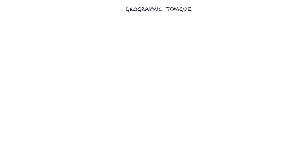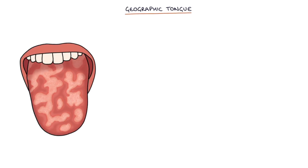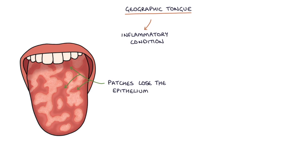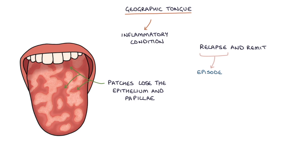Let's talk about geographic tongue. Geographic tongue is an inflammatory condition where patches of the tongue's surface lose the epithelium and the papillae. The patches form irregular shapes on the tongue, which resembles a map with countries and oceans bordering each other. The condition tends to relapse and remit, with episodes of the tongue appearing abnormal that can last days to weeks before resolving or changing.